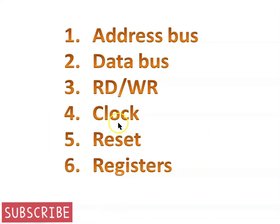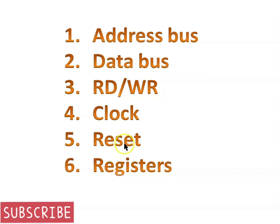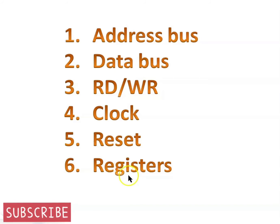Next, clock — it is a clock pulse to sequence the operations in the microprocessor. Reset means restart everything from the start: switch off and on again and start from the beginning. Registers are made out of flip flops to store information by the processor, like a notebook.